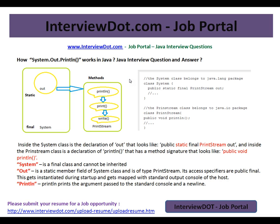Inside the System class is the declaration that looks like: public static final PrintStream out. And inside the PrintStream class is the declaration of println, which has a method signature that looks like: public void println. System is a final class and cannot be inherited.